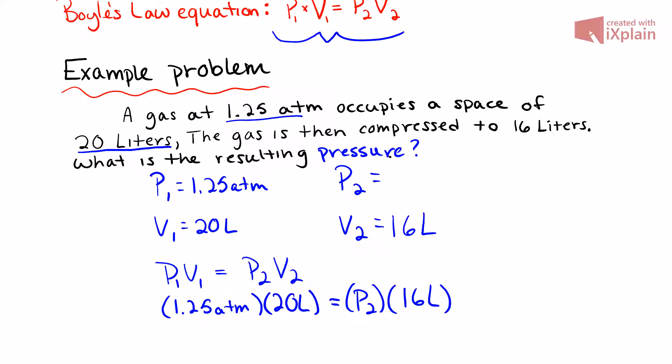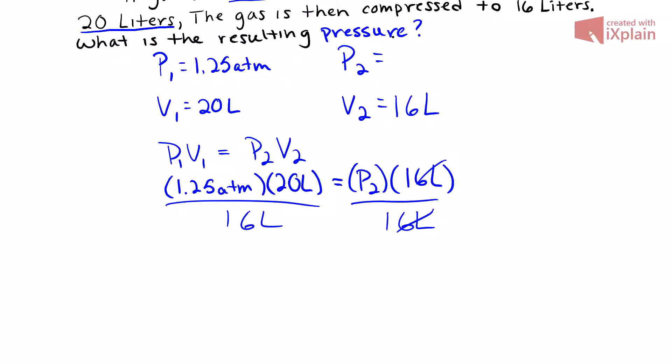Let me do the math here: 1.25 times 20, and we're going to divide that 16 out on one side to isolate P2. So we got 25 divided by 16, and our final pressure P2 equals 1.5625.